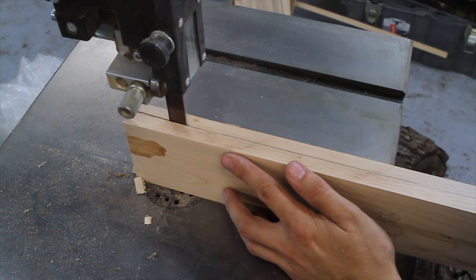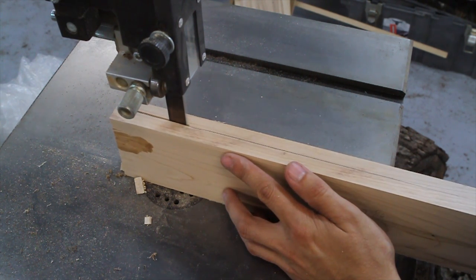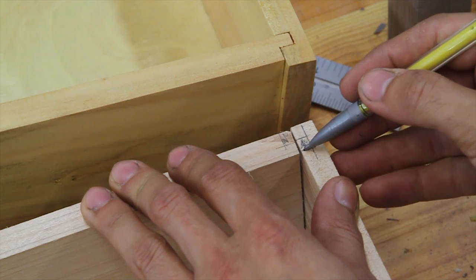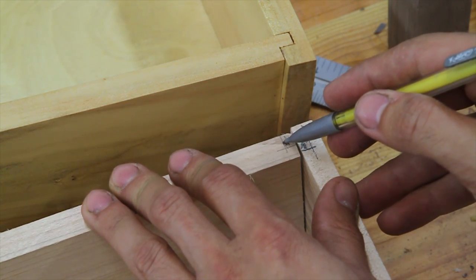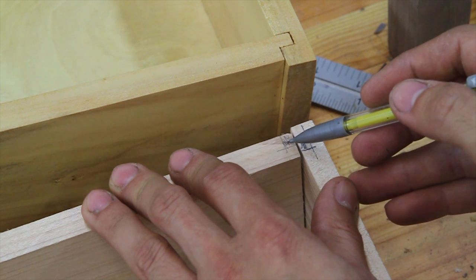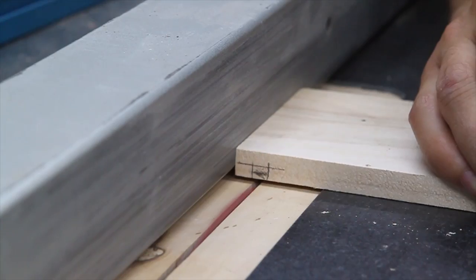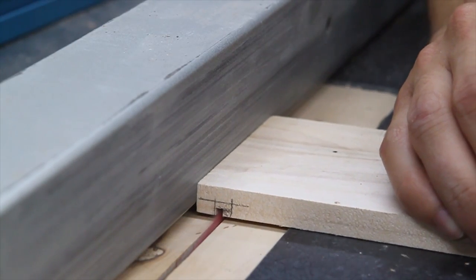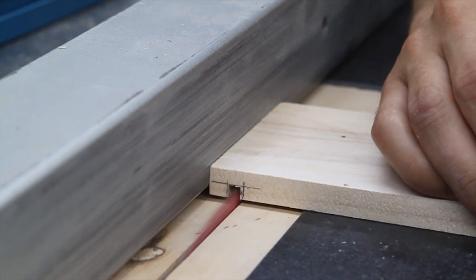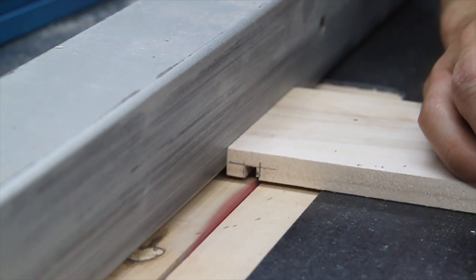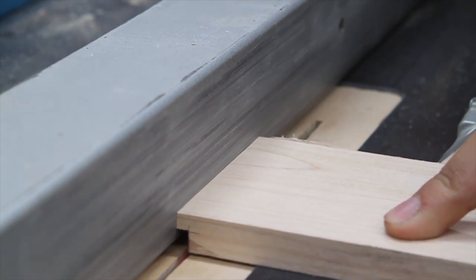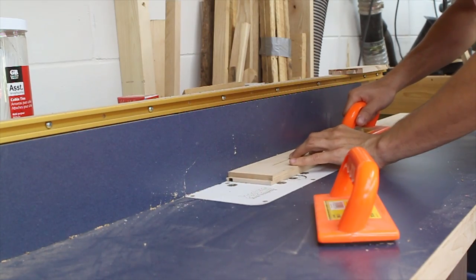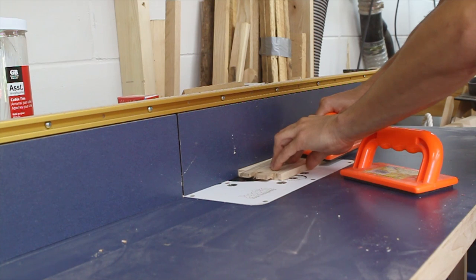I resawed some maple for the back and for the joinery I'm using a locking rabbet joint. I'm going to remove this material here from the side piece and then this material here from the back piece to create a little tongue that will fit right in here.